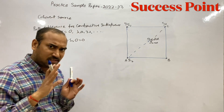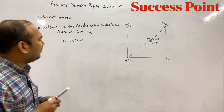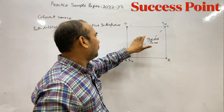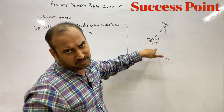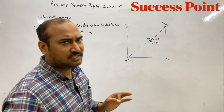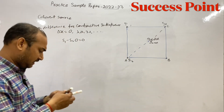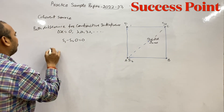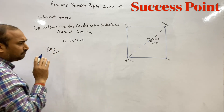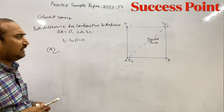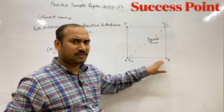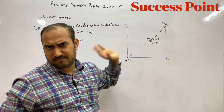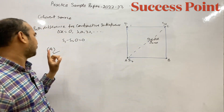So, if we have two coherent sources at any two corners, we get constructive interference at the center. We need option A — any two corners is the correct answer, because from any corner the distance to the center is equal, giving path difference zero and constructive interference.